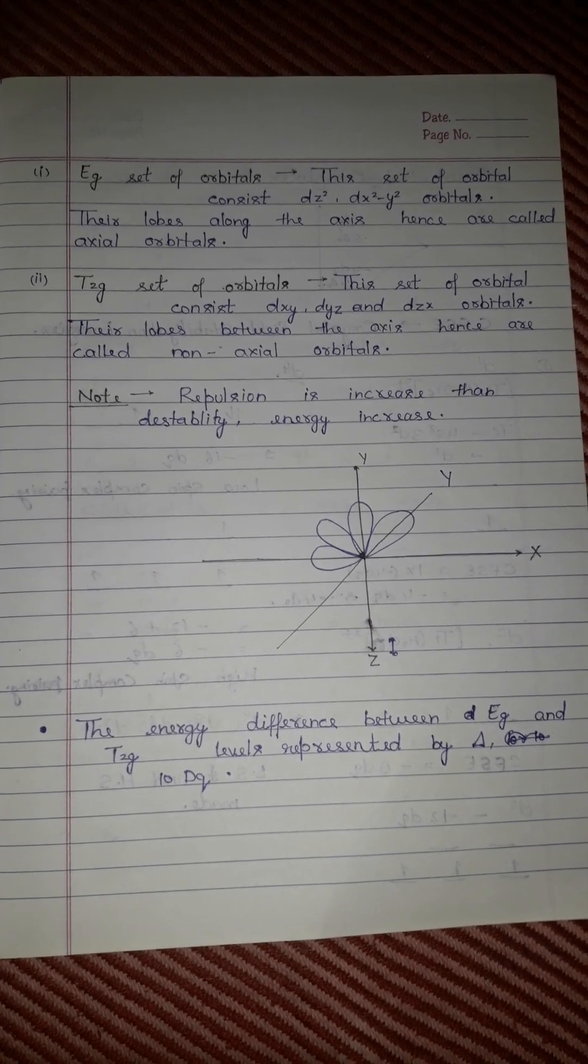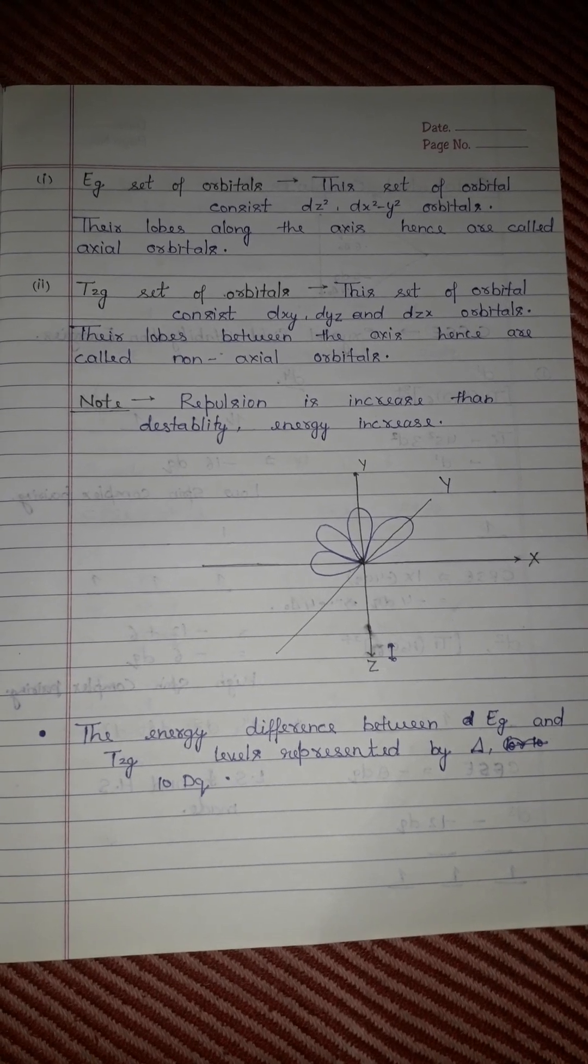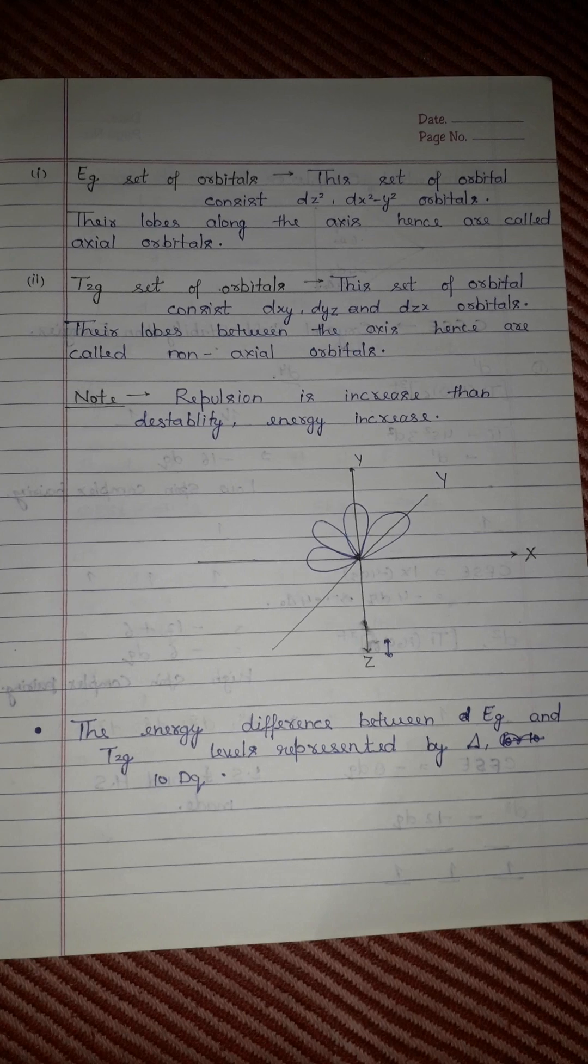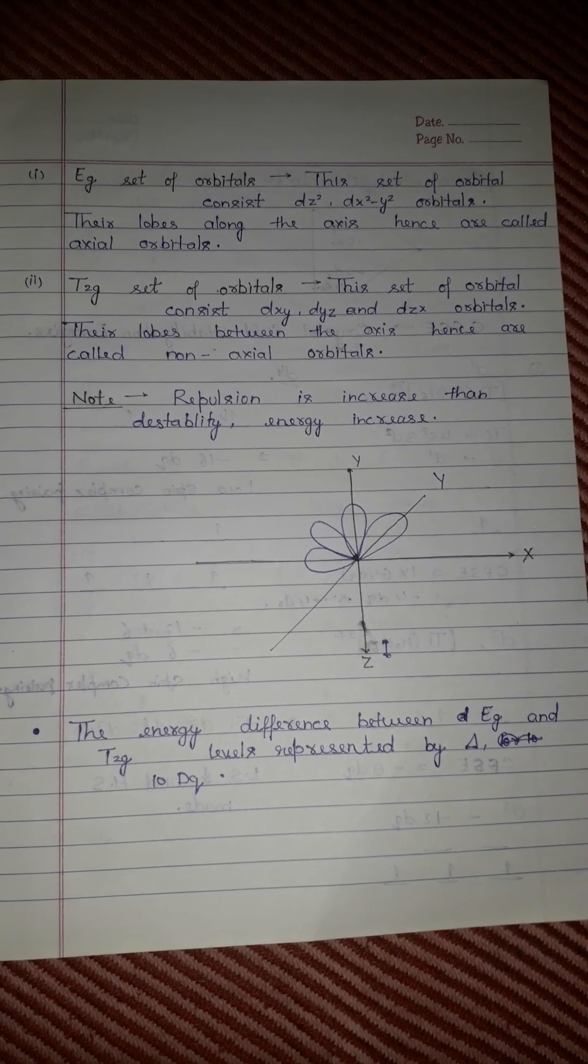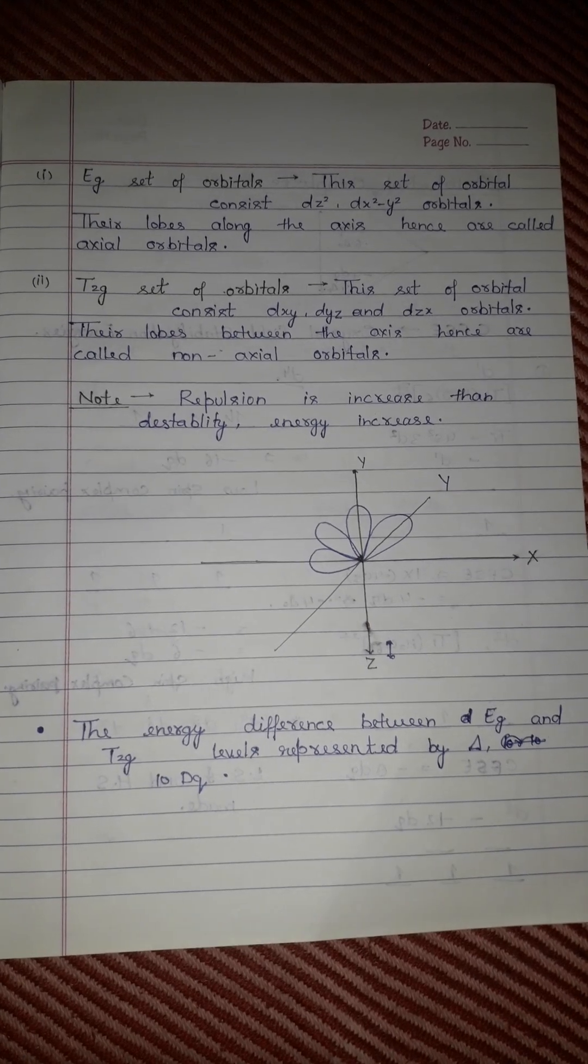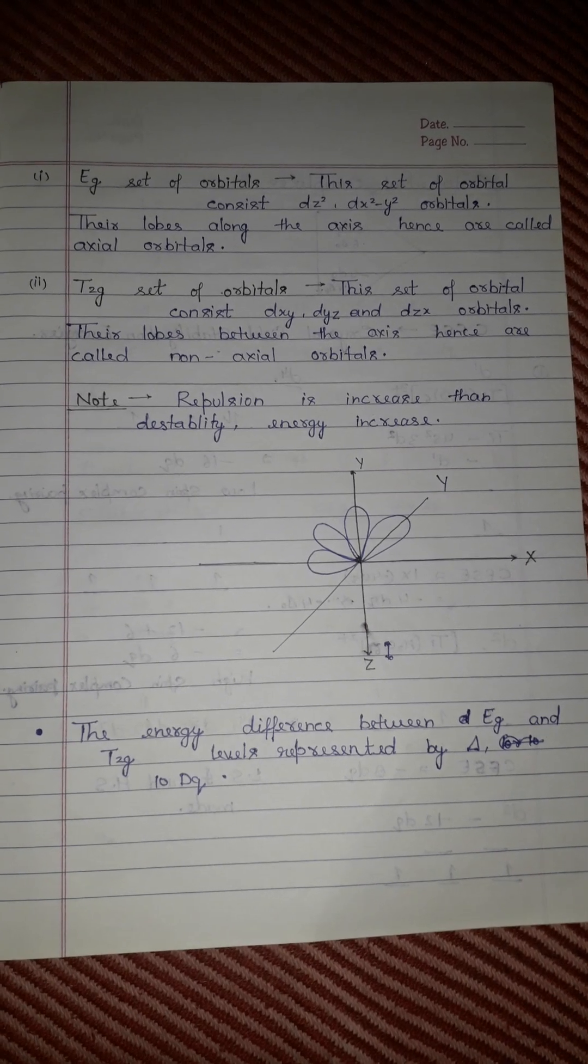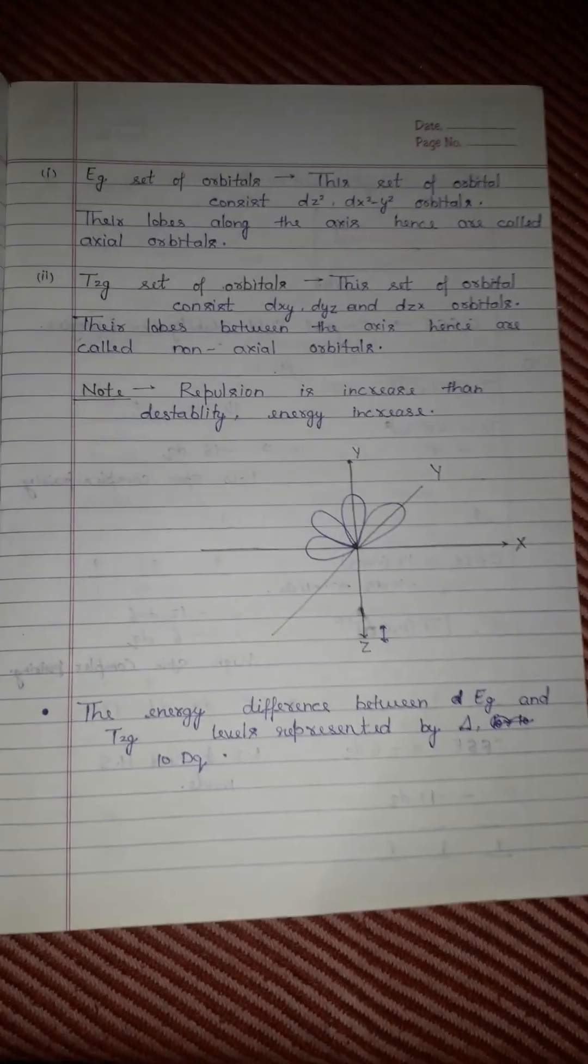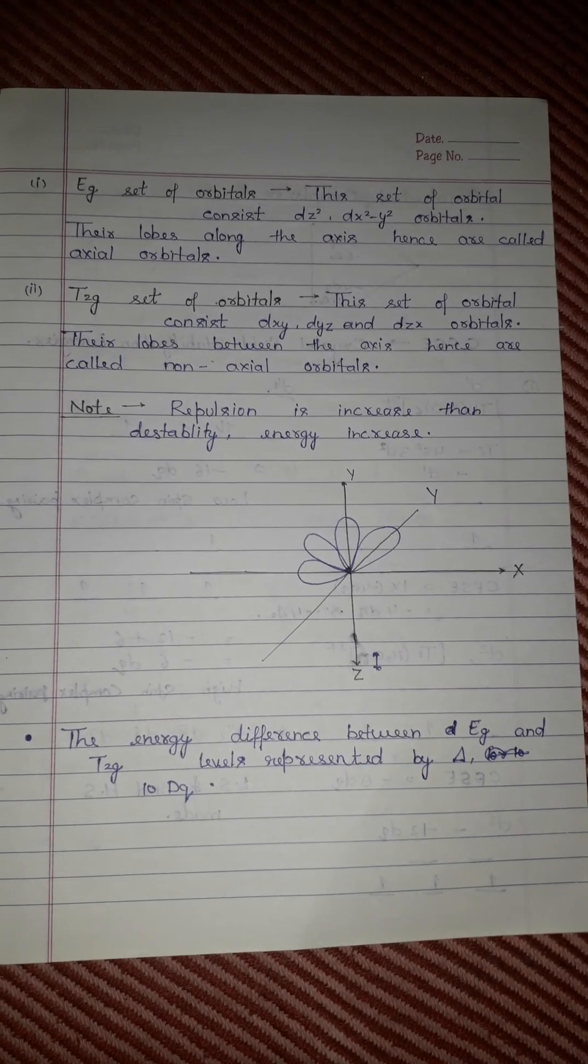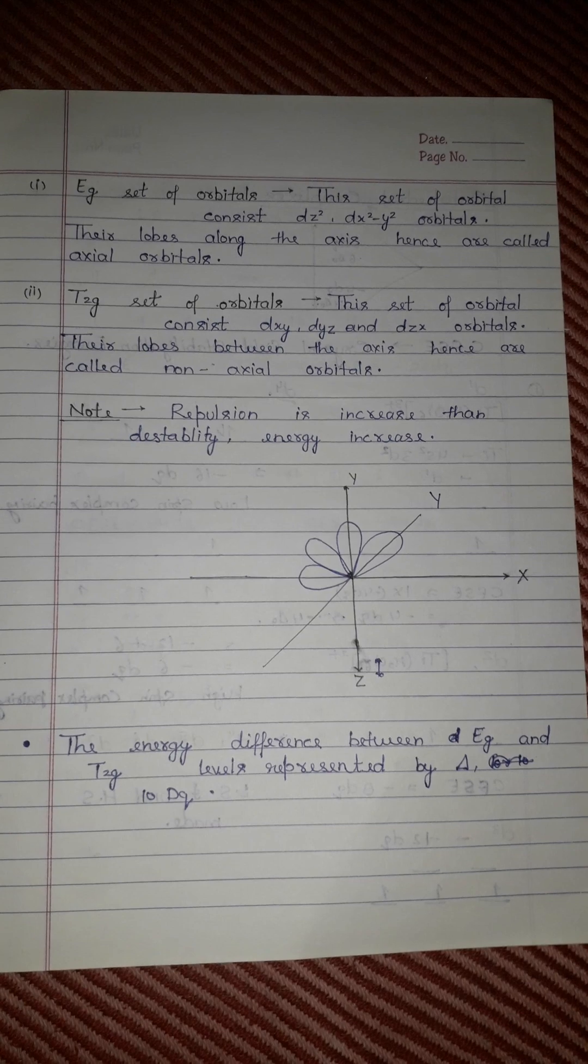The t2g set of orbitals consists of dxy, dyz, and dzx orbitals. Their lobes lie between the axes and are called non-axial orbitals. As ligand strength increases, the splitting energy increases. The energy difference between eg and t2g levels is represented by Δ (delta).